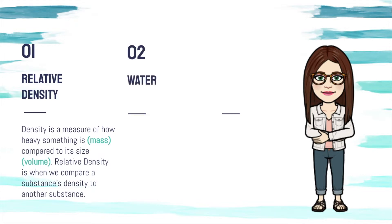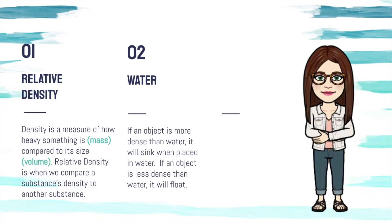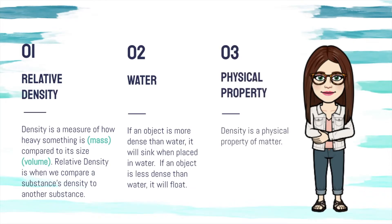And of course that's the next bullet point: water. If an object is more dense than water, it will sink when placed in water. If an object is less dense than water, it will float. Density is a physical property of matter that we get to learn about today.